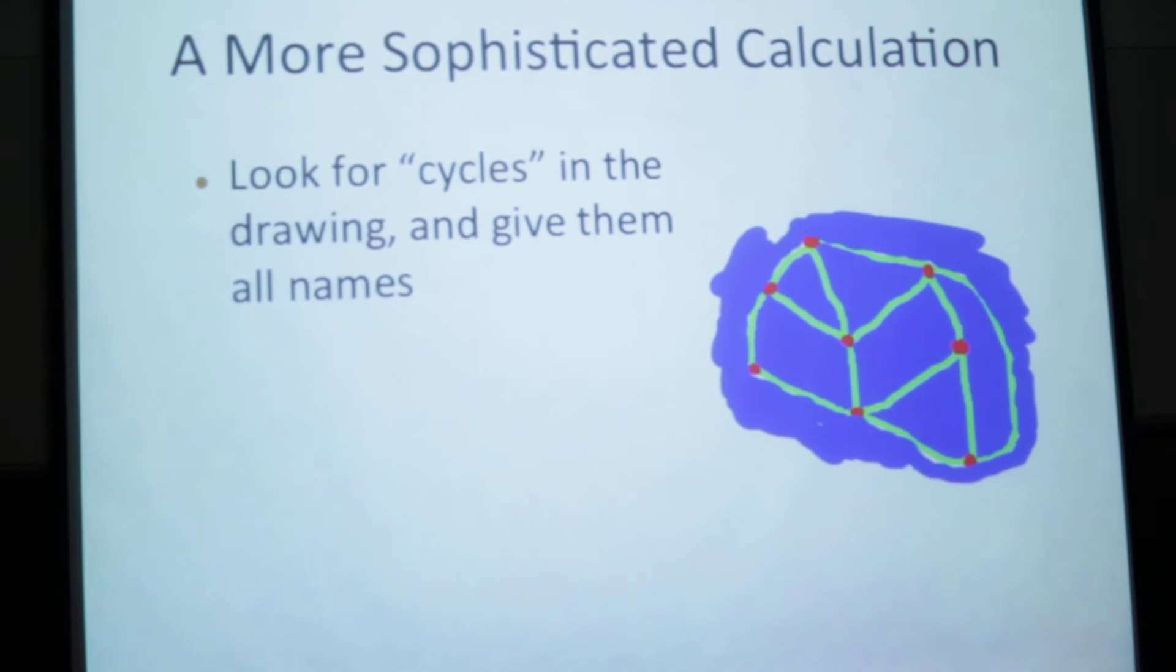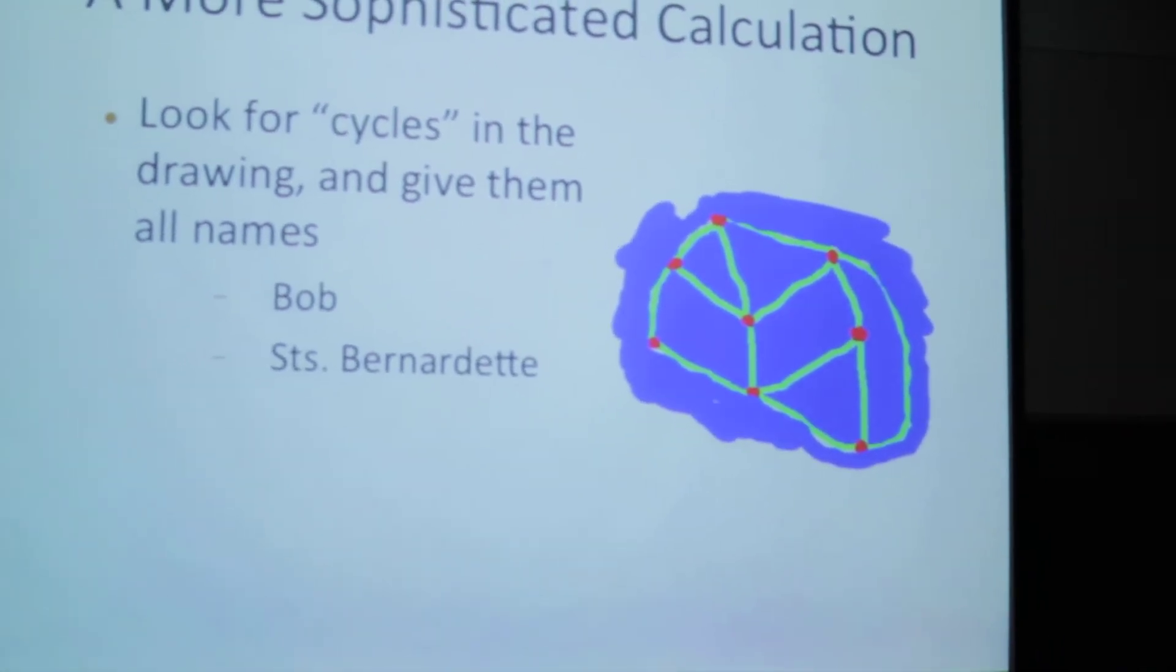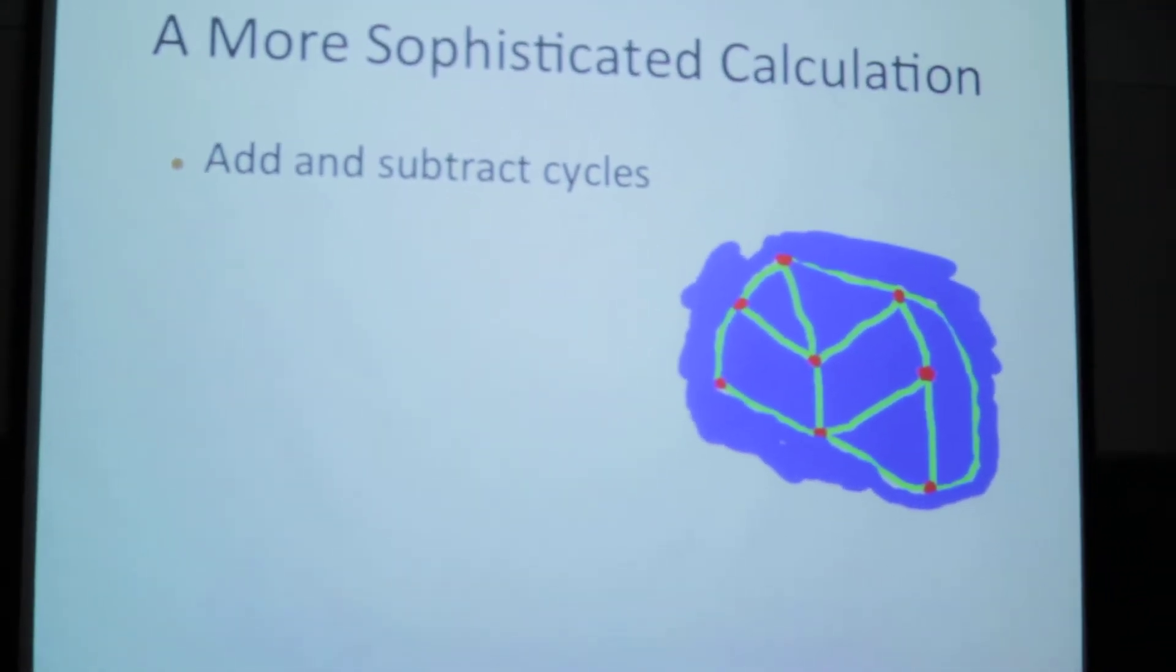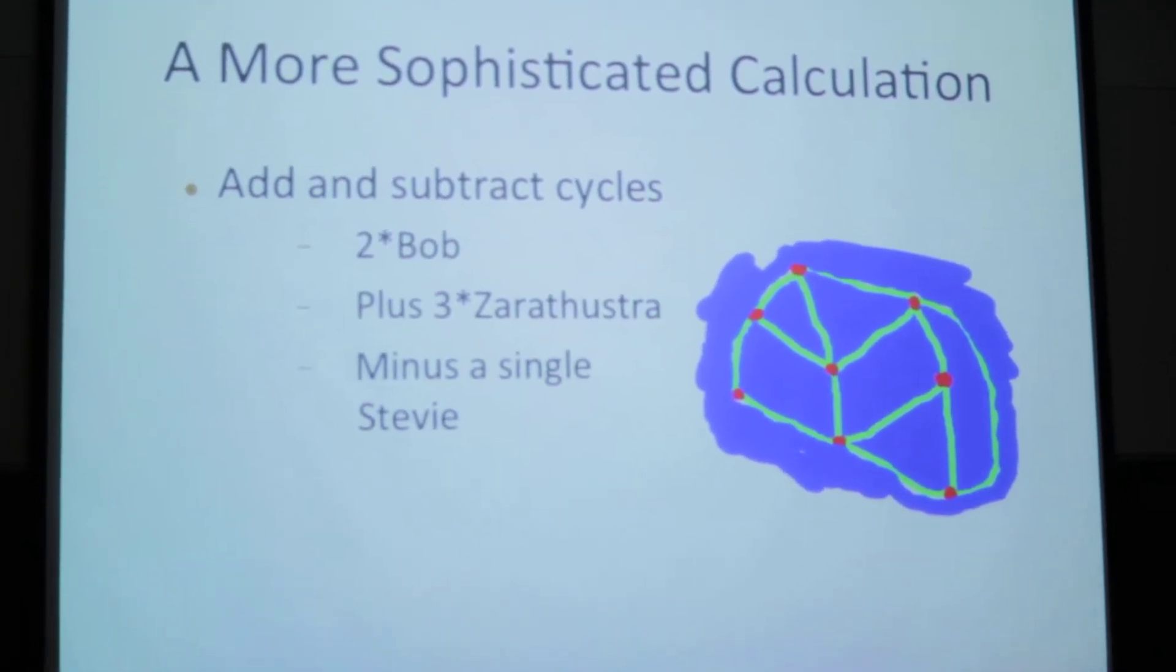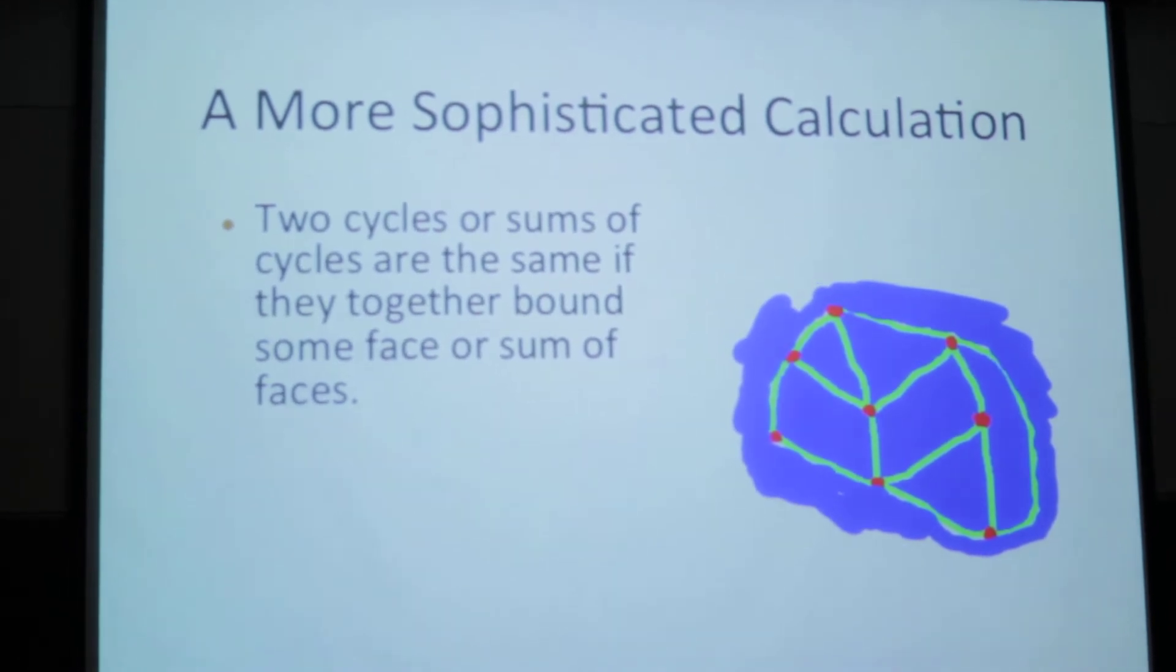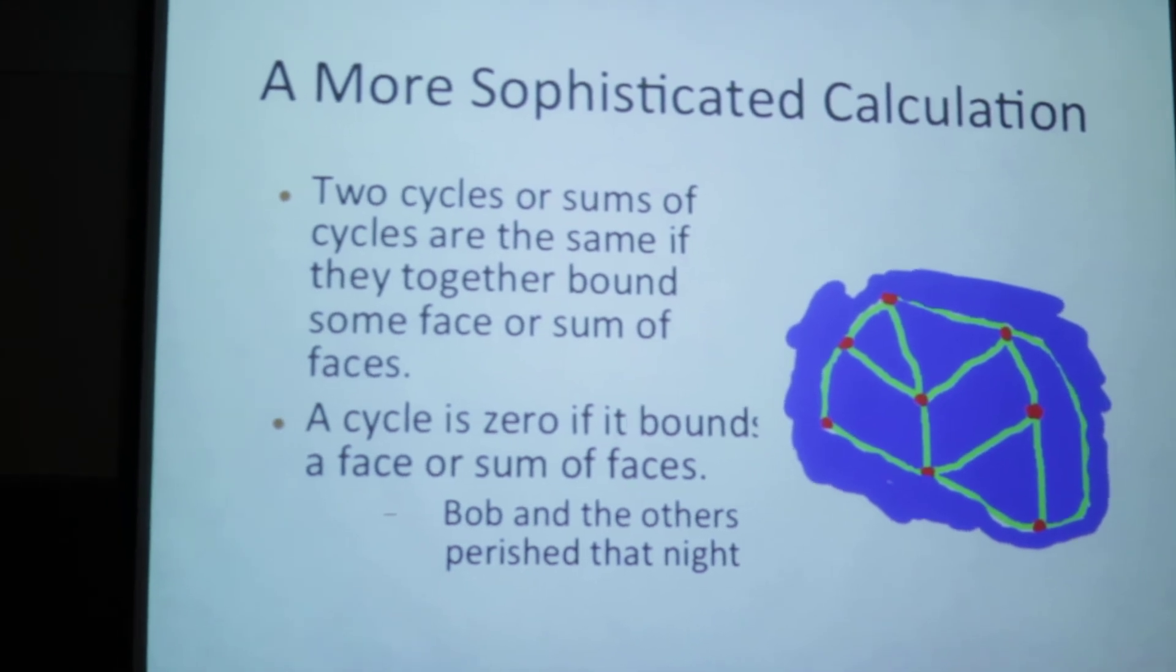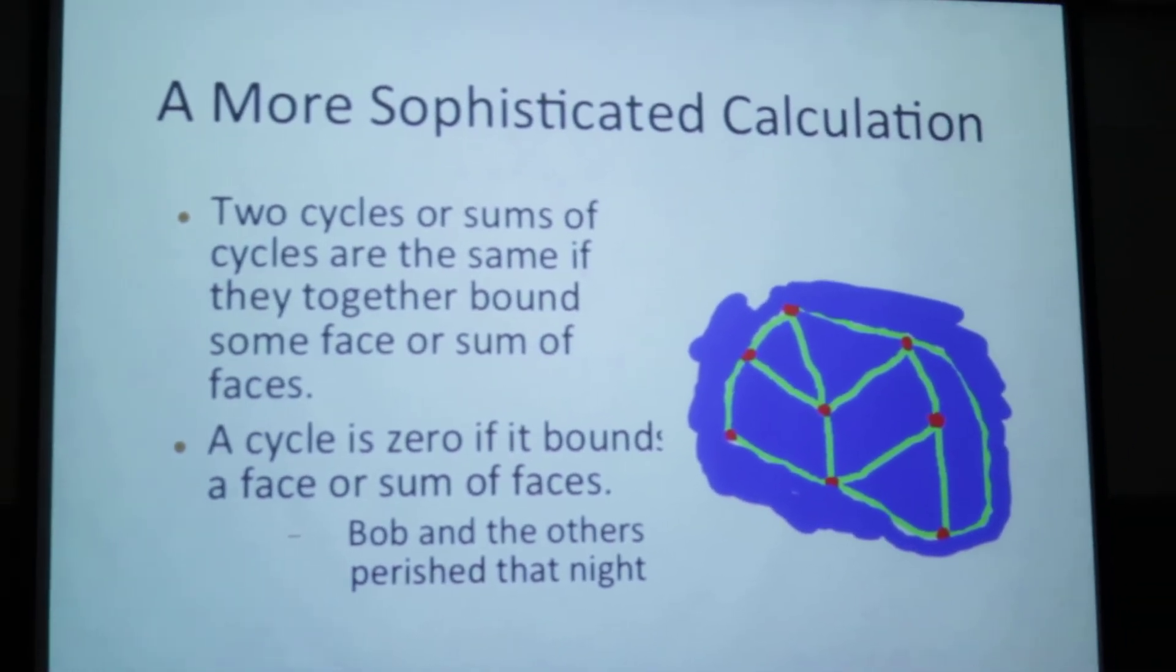But the thing is, what we need is a system for labeling and counting our holes. And again, we can do this using our old graph. It's more or less three steps. First, we look for cycles in our graph and we give them names. So that big square in the middle could be called Bob. The triangle in the upper left could be called Saint Bernardette. And the loop you get by going all the way around the graph, that could be called Zarathustra. And moreover, we want to be able to add and subtract them. So we could start out by taking two times Bob, and then add three times Zarathustra, and then subtract a single Bernardette, and that would become a cycle for our purposes. And finally, we want to say that two of them are the same if together they bound some face or sum of faces. So in particular, a cycle is zero if it itself bounds a face. So in this case, all of the cycles are zero, so Bob and the others, they're nothing to us. We should bury them now and move on.